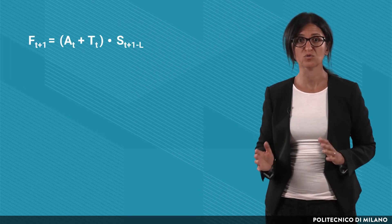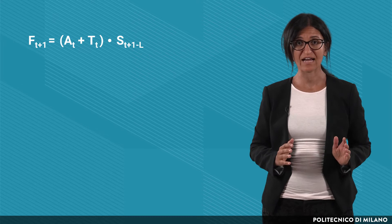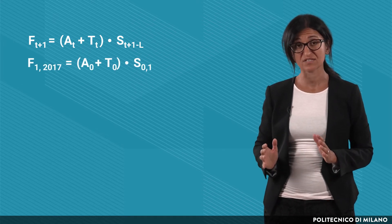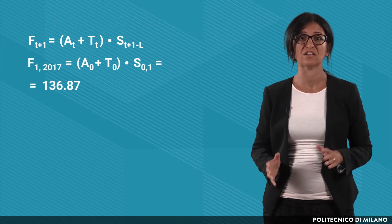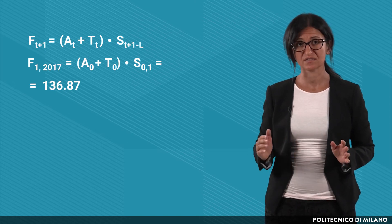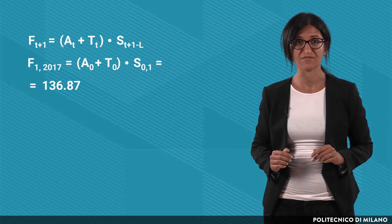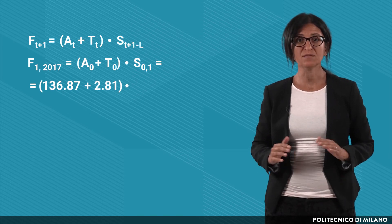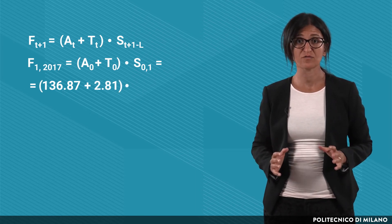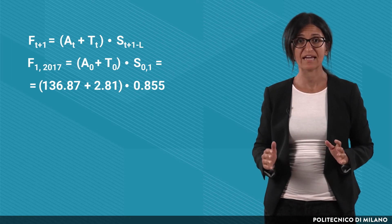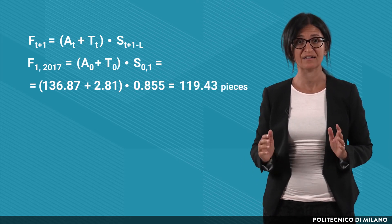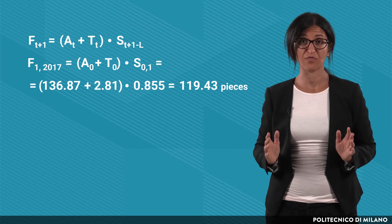Now we can forecast the future demand using the Holt-Winters method. The forecast for the first quarter of 2017 is equal to the initial average, 136.87, plus the trend, 2.81, all multiplied by the seasonal factor of the first quarter, 0.855, and we obtain 119.43 pieces.